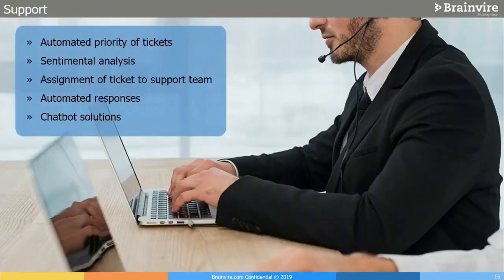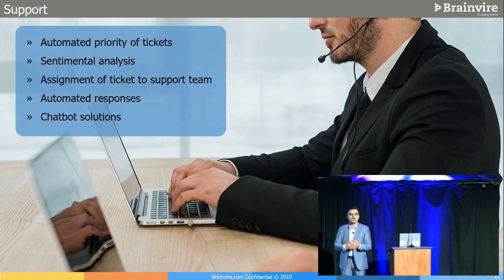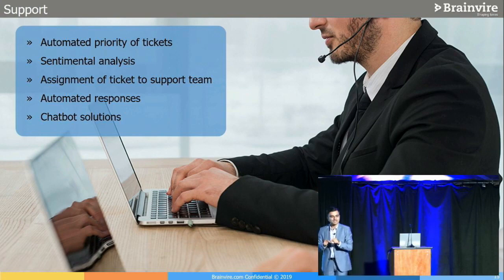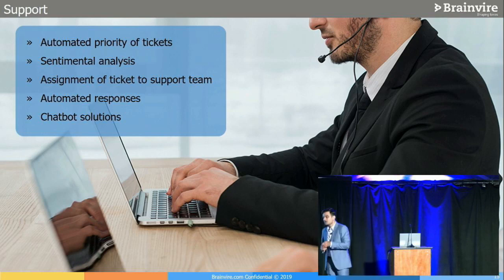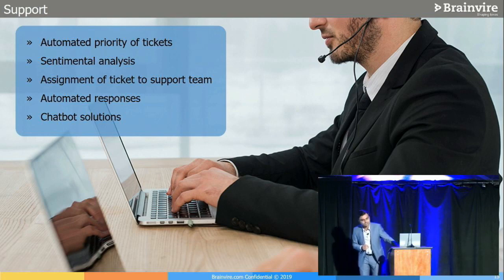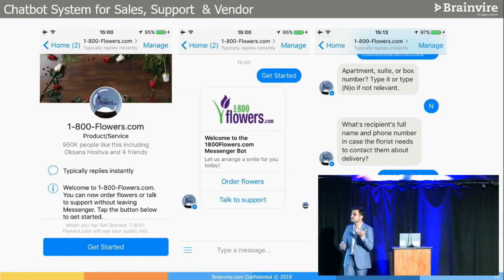For customer support and ticketing systems, we have automated ticket priority assignment — as soon as a ticket is generated, it gets classified as high, medium, or low priority. A major feature is sentiment analysis: based on what a customer writes in the email body or ticket, the system understands their emotional state — are they very angry or relatively calm? Accordingly, you can route the ticket and assign the right support person. You can also integrate chatbots that connect to sales and ticketing automatically.